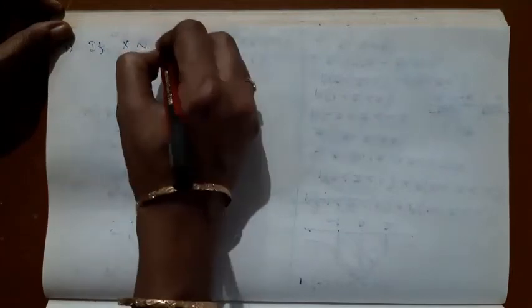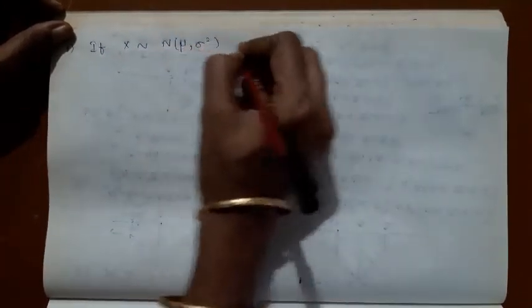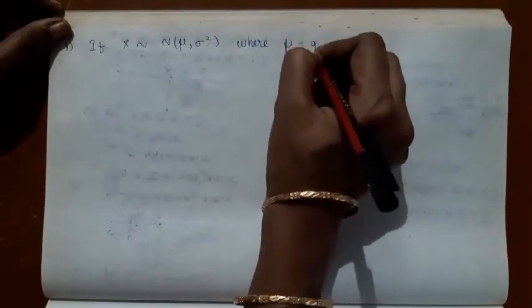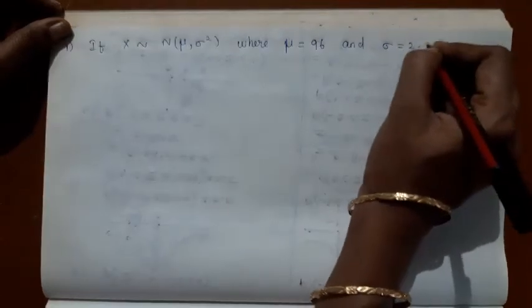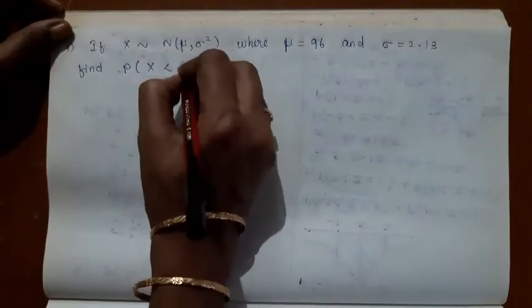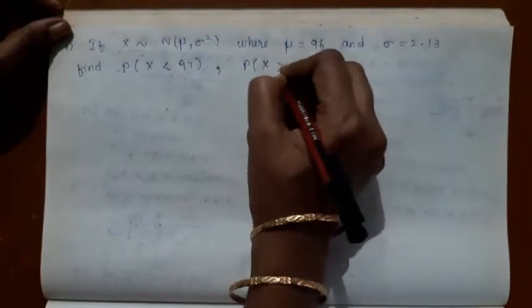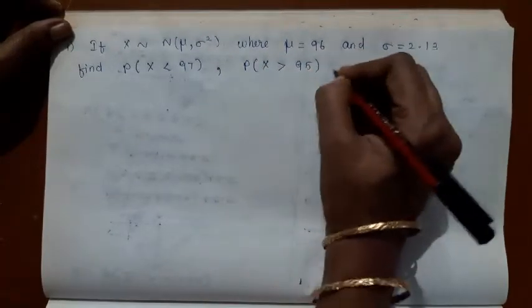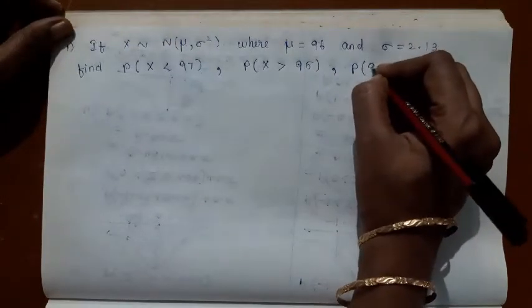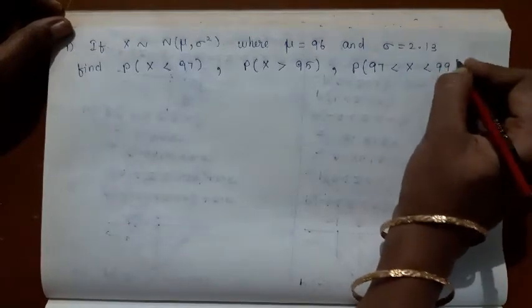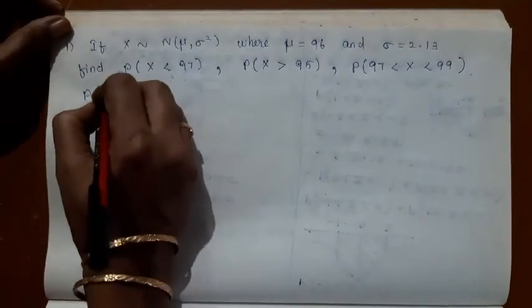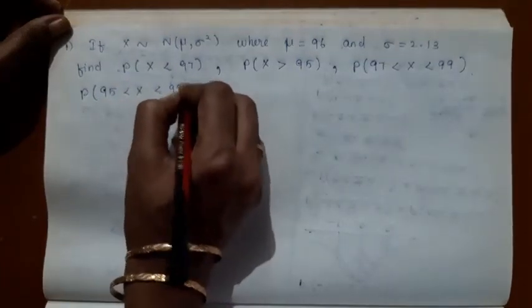Let me consider some problems in normal distribution. If X follows a normal distribution with mean mu and variance sigma squared, where mu equals 96 and sigma equals 2.13, find the probability that X is less than 97, the probability that X is greater than 95, the probability that X lies between 97 and 99, and the probability that X lies between 95 and 99. Let us do all these problems.